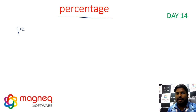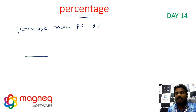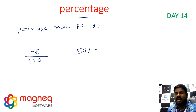Percentage means per 100, and whose denominator is always 100. To convert 50% into a fraction: 50 by 100 equals 1 by 2.